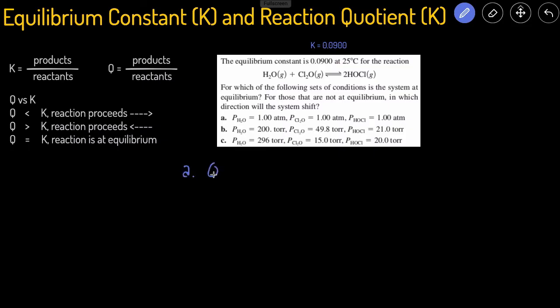So we know that Q is equal to products over reactants, but this time they give us the pressure. So we'll be using pressure products over pressure reactants. So we'll have pressure of the HOCl, and there's a coefficient of 2, so that means we got to square this because the coefficient become the powers, divided by the pressure of the reactants, and they're both gases. We want to check the states because we never include solids or liquids in the Q or the K expression.